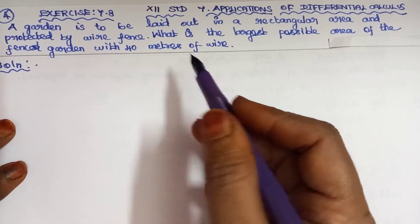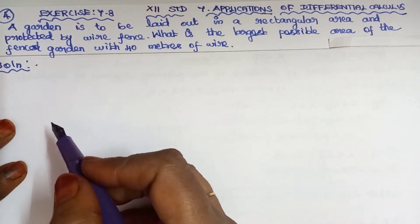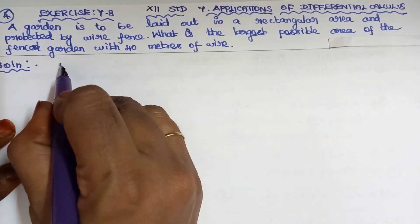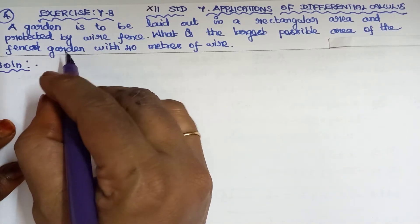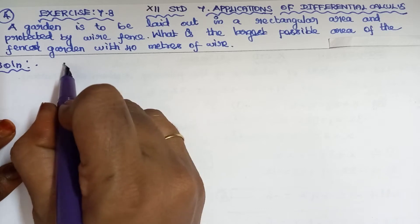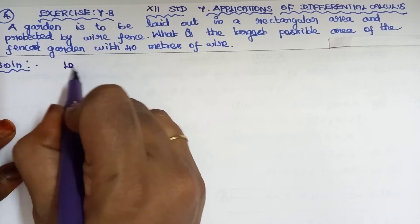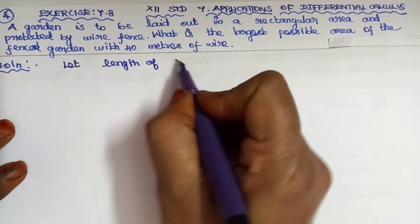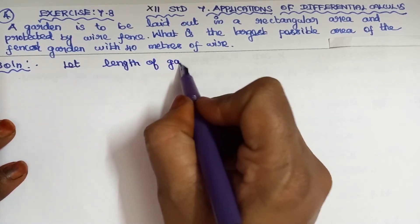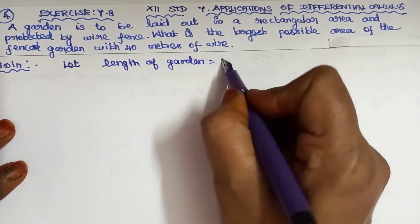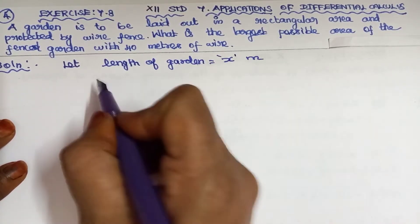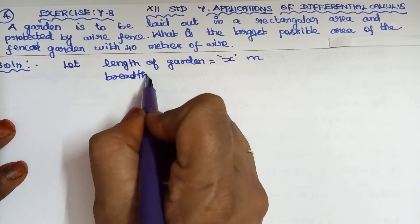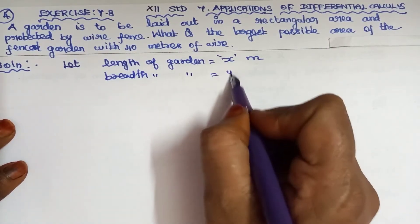If we know the length and breadth of the garden, we will find out the area. Let's consider the length of the garden equal to x meters and the breadth of the garden equal to y meters.